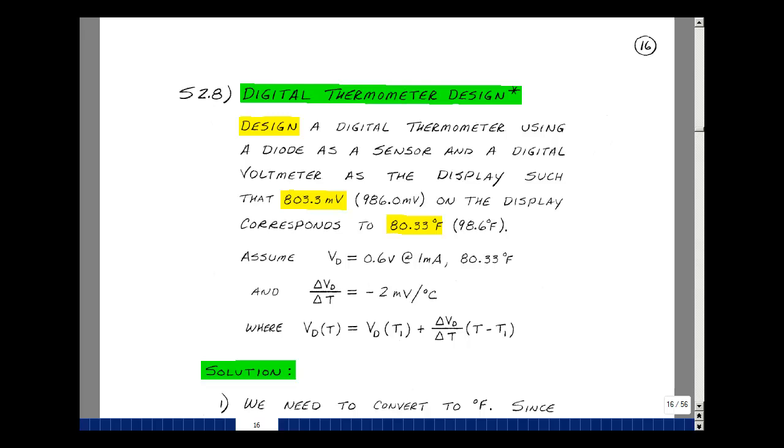Since a diode varies linearly with temperature when it's forward biased, let's design a digital thermometer using a diode as a sensor and a digital voltmeter as a display such that 803.3 millivolts corresponds to 80.33 degrees Fahrenheit, and 986.0 millivolts corresponds to 98.6 degrees Fahrenheit. This design is based on a magazine article in Populartronics entitled Build a Temperature Adapter for Your Digital Multimeter, volume 14 number 1, pages 48 to 50.